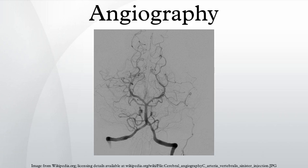The word itself comes from the Greek words 'angeion', meaning vessel, and 'graphein', meaning to write or record. The film or image of the blood vessels is called an angiograph, or more commonly, an angiogram. Though the word itself can describe both an arteriogram and a venogram, in everyday usage the terms angiogram and arteriogram are often used synonymously, whereas the term venogram is used more precisely.